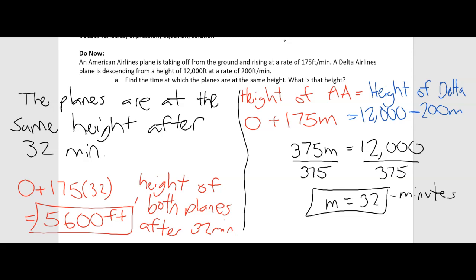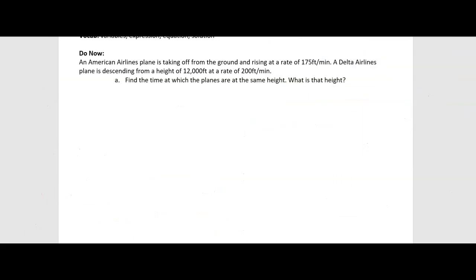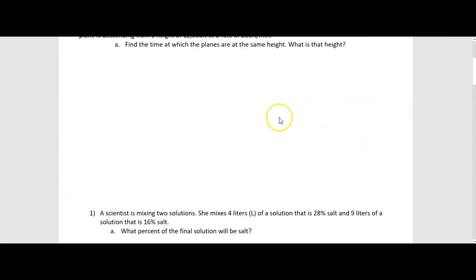Don't just focus on getting the answers, but focus on explaining what those answers are and what they represent. The sentence written here is important, as well as explaining what the 5,600 represents. Okay, let's jump into some problems we have for today.